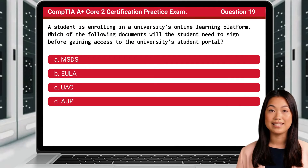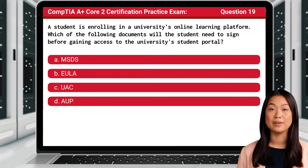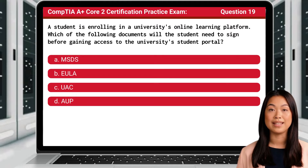Question 19. A student is enrolling in a university's online learning platform. Which of the following documents will the student need to sign before gaining access to the university's student portal?